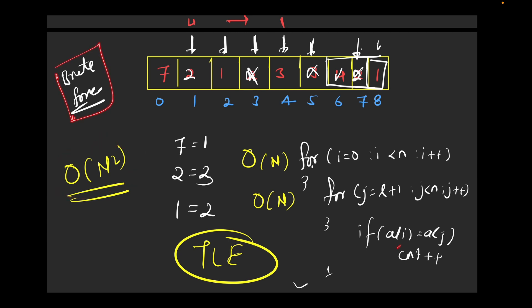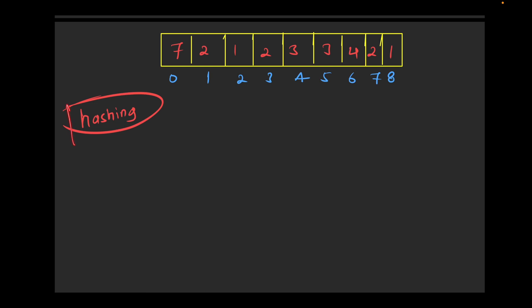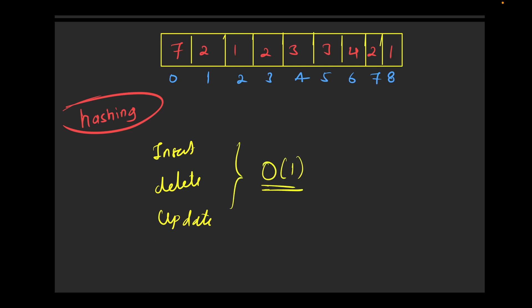Now let's move to the optimal solution. We'll learn a new concept called hashing. Hashing is a data structure concept where insert, delete, and update can be done in O(1) time — though depending on which set or hashing you use, it can sometimes take O(log n). Either way, it's much better than O(n²).